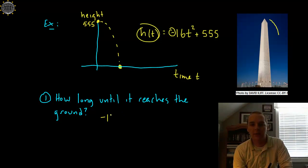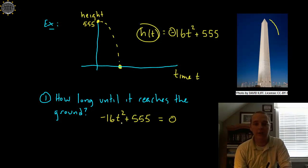So if we took -16t² + 555 and set that equal to zero, that's like asking when did the coin have a height of zero, or when did it hit the ground?